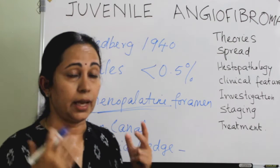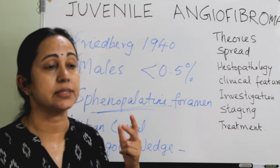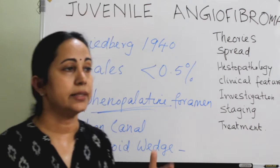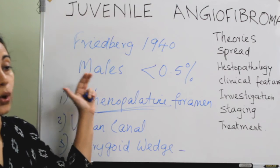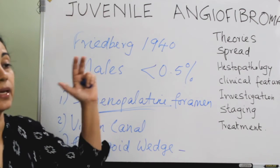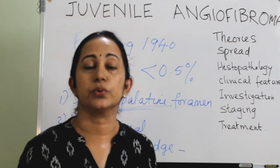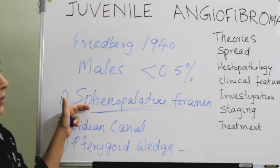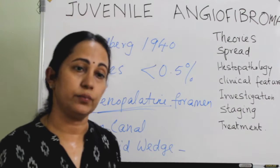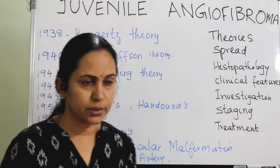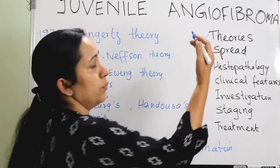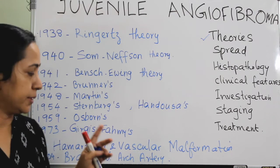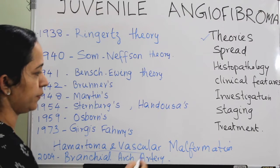In summary, angiofibroma is a benign but locally invasive tumor with the property of intracranial extension, coined by Friedberg in 1940, occurring exclusively in males, constituting less than 0.05% of all head and neck tumors, and most commonly originating from the sphenopalatine foramen. Since the exact etiology is not known, there was an overflow of theories of origin of JNA, and the most accepted theory is the hematoma and vascular malformation theory.